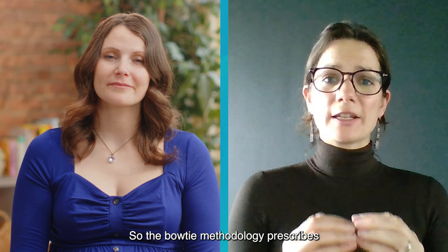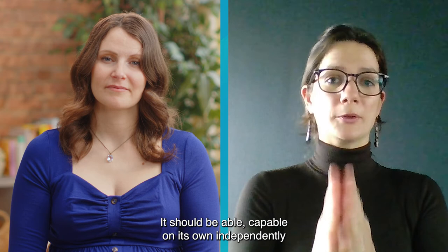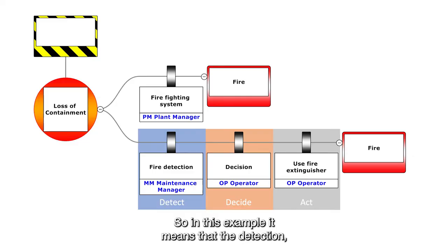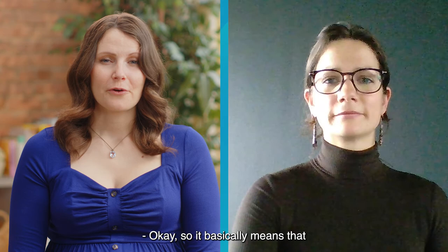Let's take a fire extinguishing system as an example. The Bowtie methodology prescribes that every barrier on the model should have detect, decide, and act components. It should be capable on its own, independently, to stop the situation from progressing, and it should be auditable. In this example, it means that the detection, the decision logic, as well as the reaction of the fire extinguisher should all be accounted for within the same barrier system. And it should be possible to inspect whether all of its components are actually functioning as intended.